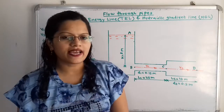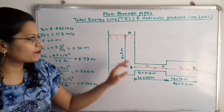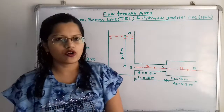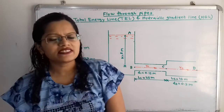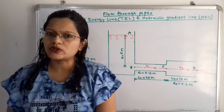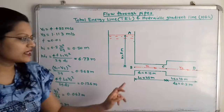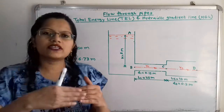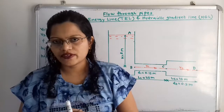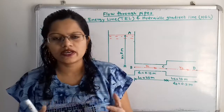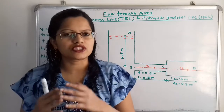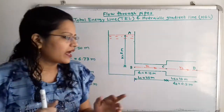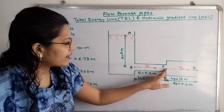When water from the tank enters into this pipe, there is a head loss — that is the head loss due to friction at the entrance. When this water flows through the pipe, it is in contact with the surface of pipe one, so again there are losses due to friction in pipe one, which we call hf1.